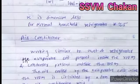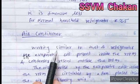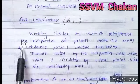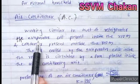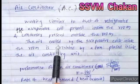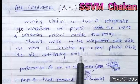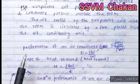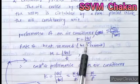An air conditioner works in a similar manner to a refrigerator. The air cooled by the evaporator coil inside the room is circulated by a fan placed inside the air conditioning unit. For an air conditioner, the performance K equals Q_C divided by W.